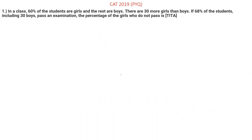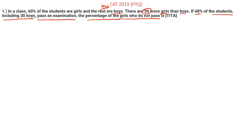Let's start with the first question. Pause this video, solve the question, then check my solution. The question: in a class, 60% of the students are girls and the rest are boys — it means 40% are boys. There are 30 more girls than boys, meaning the difference between girls and boys is 30. If 68% of students including 30 boys pass an examination, find the percentage of girls who do not pass.